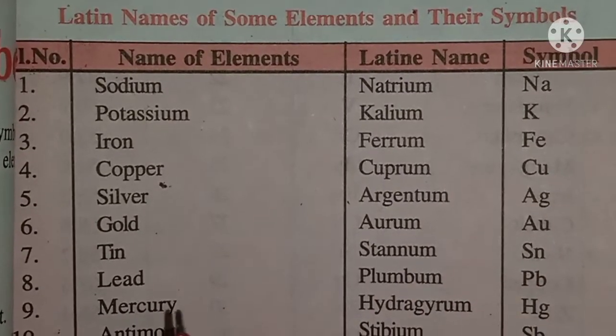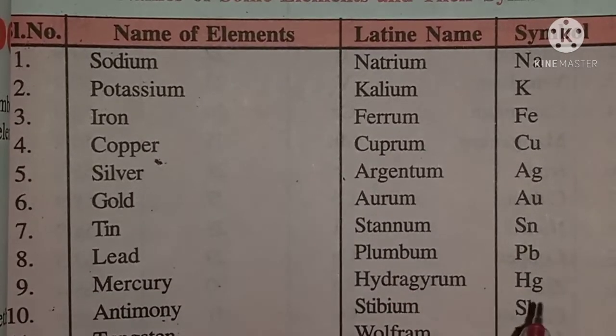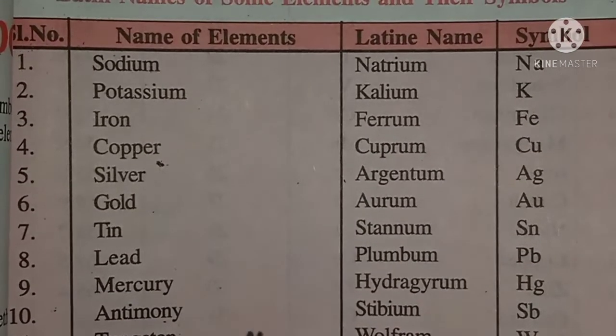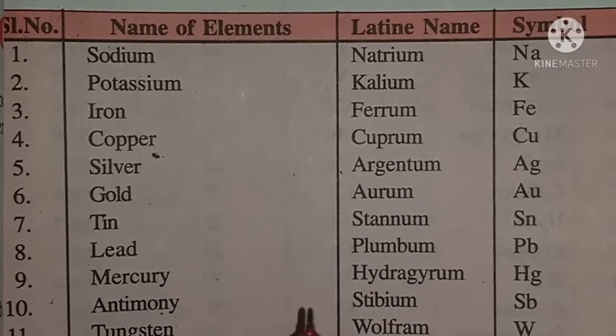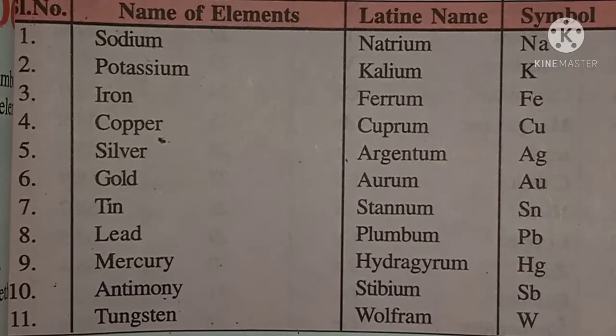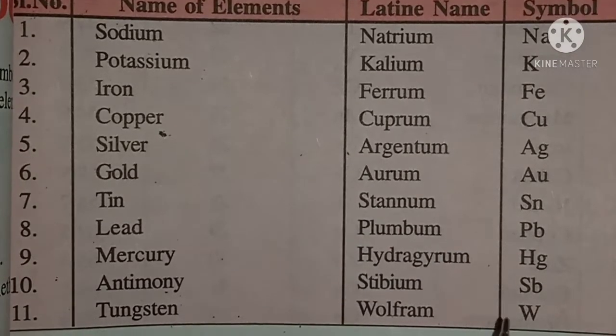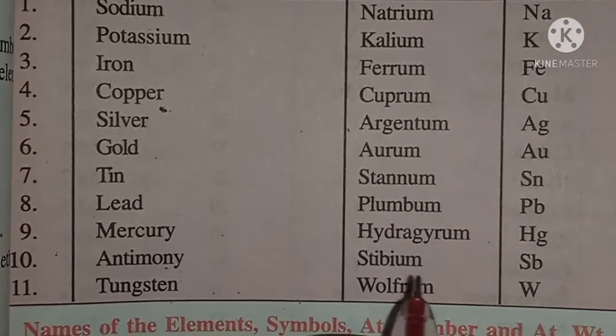Mercury: Latin name Hydrargyrum, symbol Hg. Antimony: Latin name Stibium, symbol Sb. Tungsten: Latin name Wolfram, symbol W.